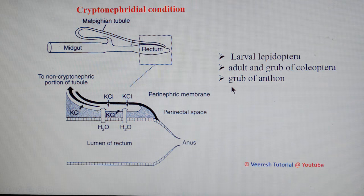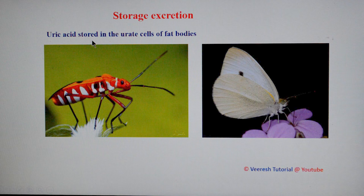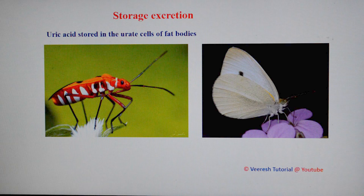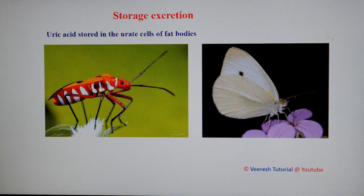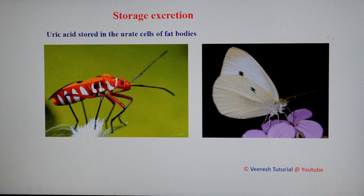Storage excretion involves uric acid being stored in the urate cells of fat bodies in a harmless manner instead of being excreted. These waste products are stored in the body rather than eliminated. In cockroaches, uric acid stored in urate cells of fat bodies is reutilized when the insect feeds on a nitrogen-deficient diet. Uric acid stored in the body wall gives a white color pattern in red cotton bugs, whereas uric acid stored in wing scales gives white coloration in piereid butterflies.